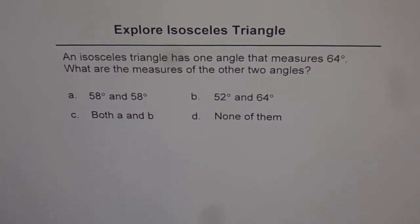Let us explore isosceles triangles. An isosceles triangle has one angle that measures 64 degrees. What are the measures of the other two angles?